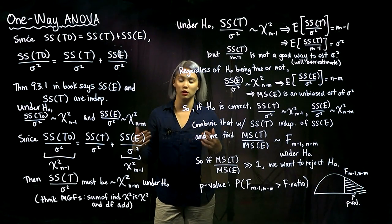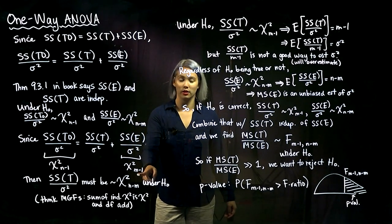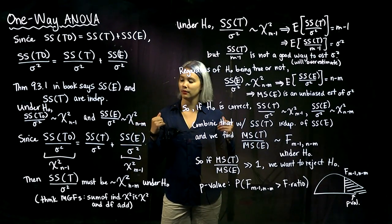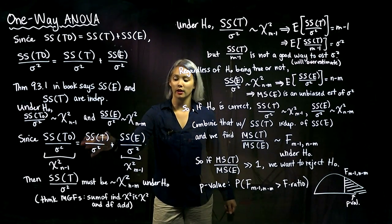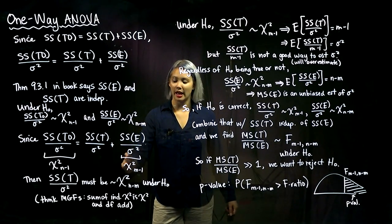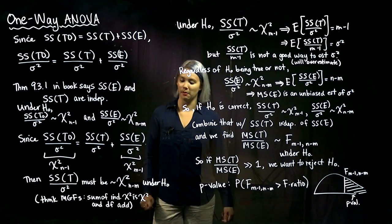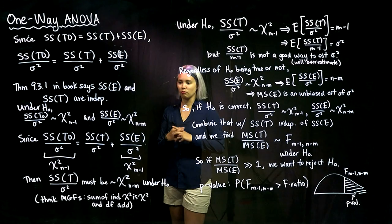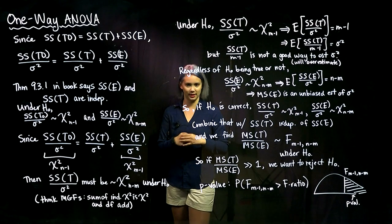The way these work is that chi-squared with some degrees of freedom plus chi-squared with n minus 1 degrees of freedom equals chi-squared with the sum of degrees of freedom — the degrees of freedom just add. So if this has n minus 1 degrees of freedom and this has n minus 1 degrees of freedom, then it's not a mystery: it's going to be n minus m degrees of freedom, because we need n minus m plus m minus 1 to equal n minus 1. Under the null hypothesis, this must be a chi-squared random variable with n minus m degrees of freedom.